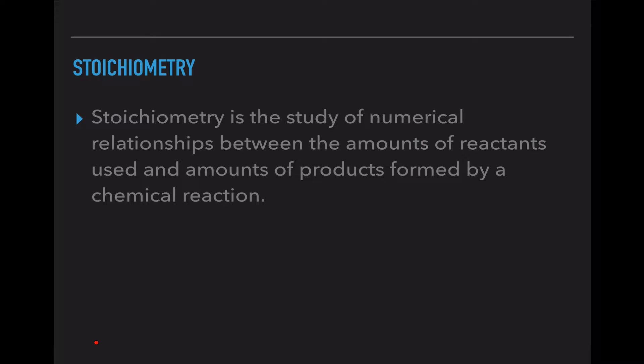So stoichiometry is a study of numerical relationships between the amounts of reactants used and the amounts of products formed by a chemical reaction. Now that's super science lingo, so essentially this is just a recipe. The chemical reaction is the recipe we're going to follow and maybe we only have a little bit of stuff in our cupboard or in our chemical cupboards in order to make this recipe. So it tells us with how much we start with what are we going to get as an end product.